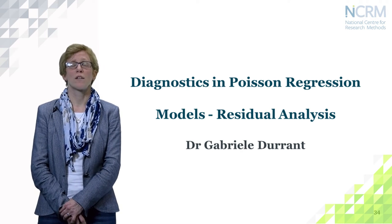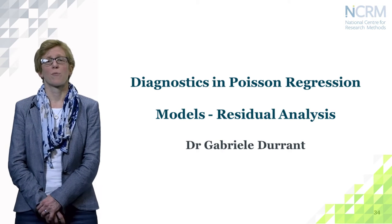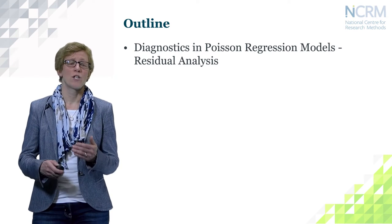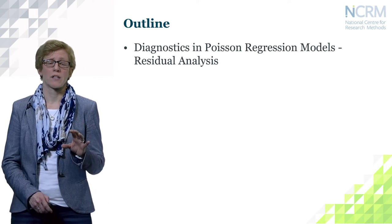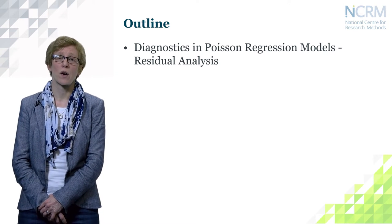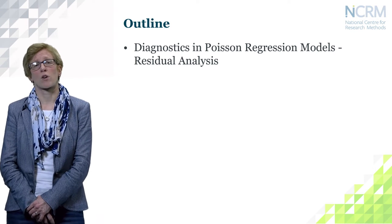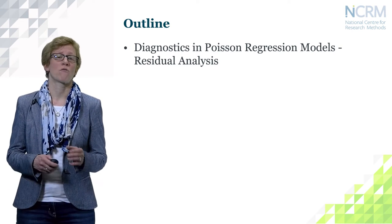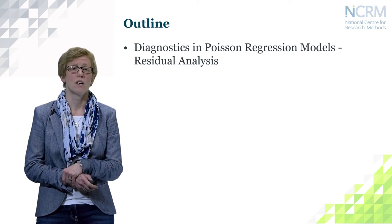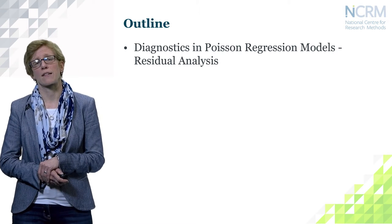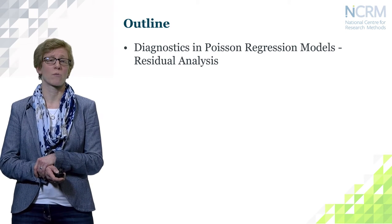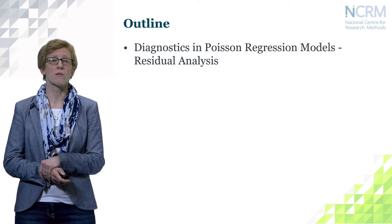Let's look at some diagnostics in Poisson regression models. I will introduce some residual analysis briefly. We have already discovered that based on the log-likelihood test statistic and the Pearson chi-square test statistic the model may not hold, but let's look at what it does to the residuals and introduce what types of residuals there are for Poisson regression models. We can later extend our model using a categorical variable or another explanatory variable.